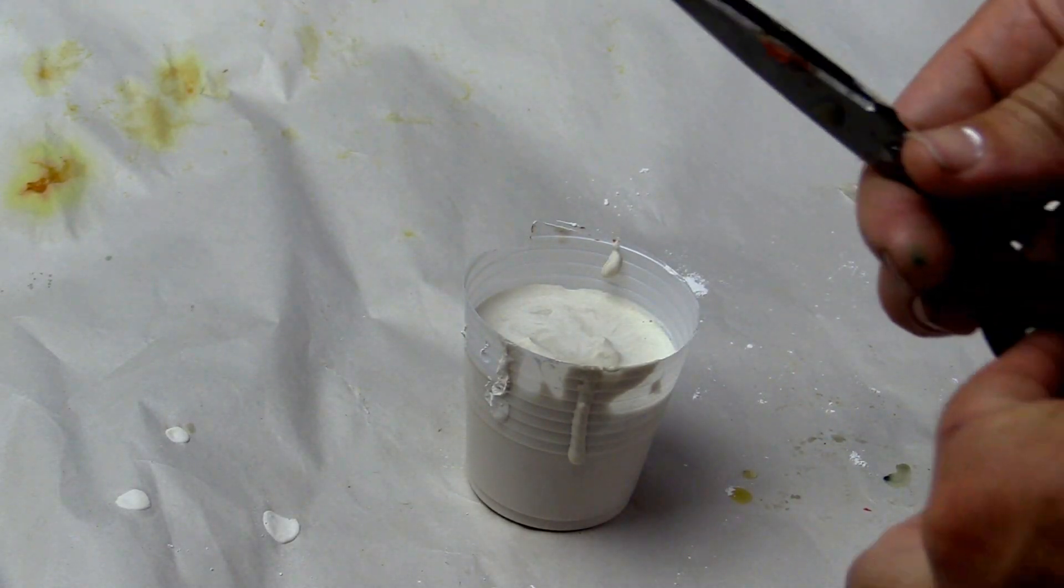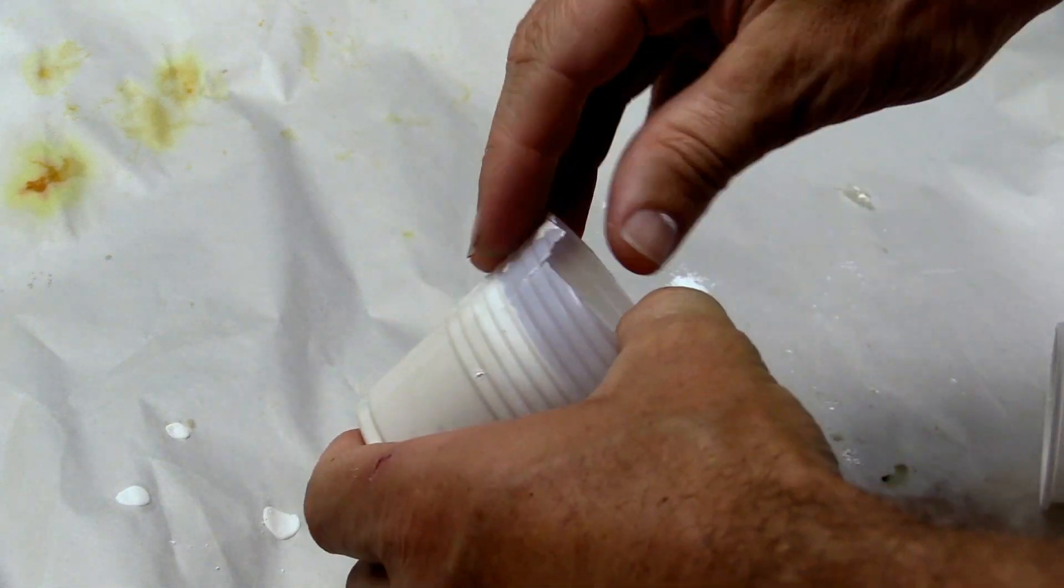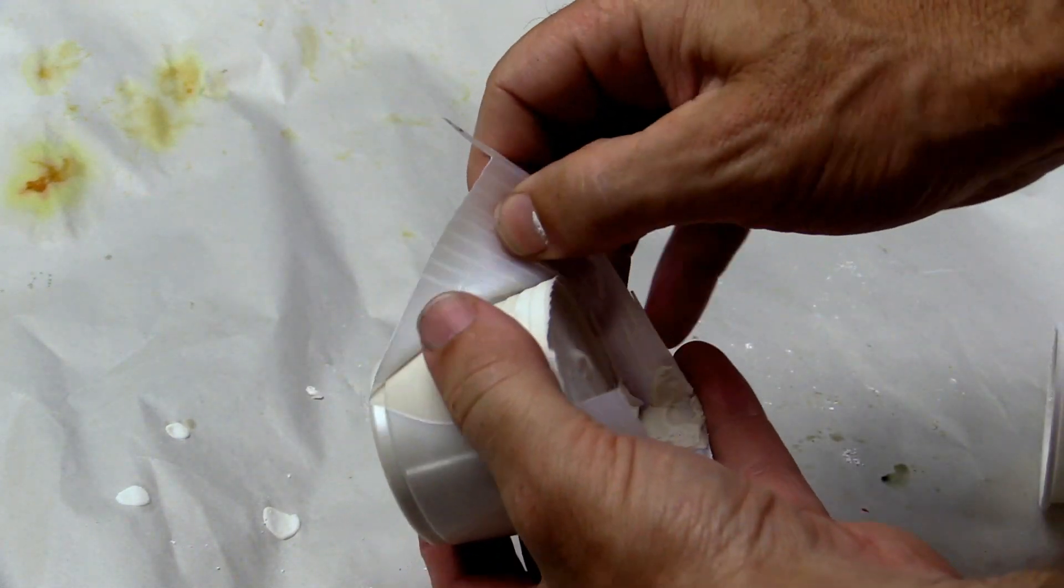Cut away the mold box to remove the plaster mold from the cup and now comes the lost wax process.